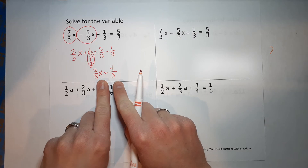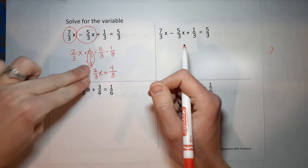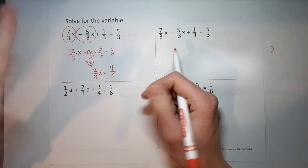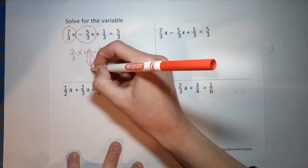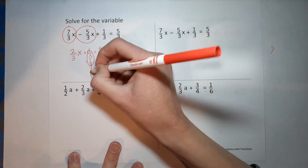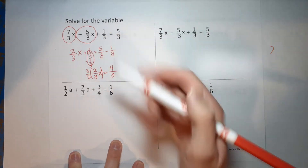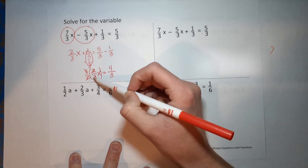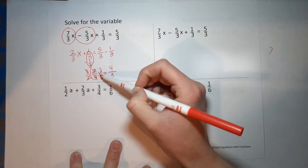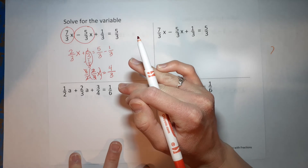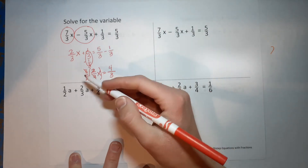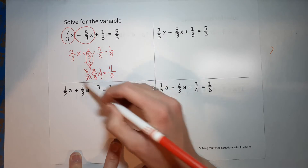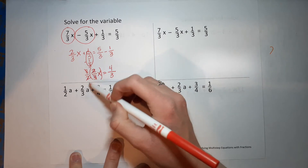Now we're going to do what is called — are you ready for a big word — reciprocal. A reciprocal is a fraction flipped. Why does it matter? Because when I multiply this side by the reciprocal, which would be 3 over 2, a number over itself is just 1 — two divided by two is one, three divided by three is one — so I'm just left with one x over there. Fractions gone!